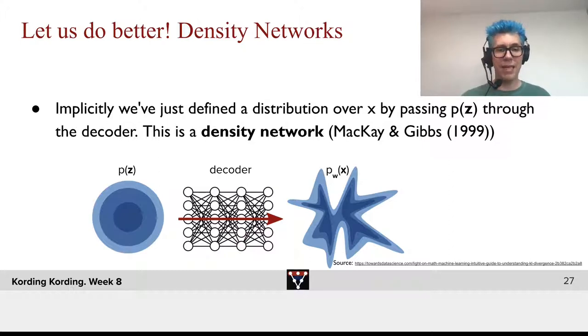What's the idea there? We can say we take a probability distribution p(z) which we assume is a Gaussian that goes to the decoder.